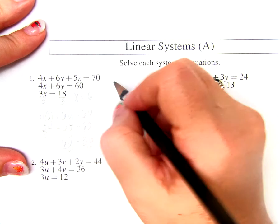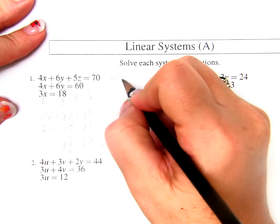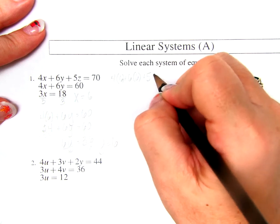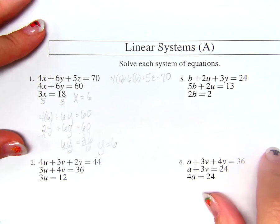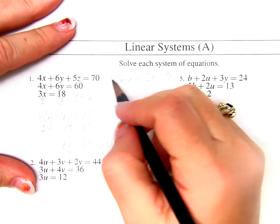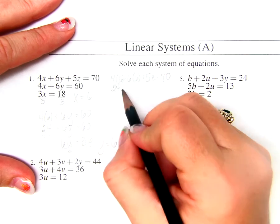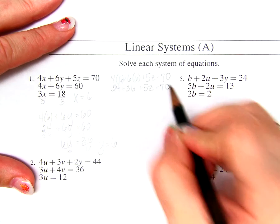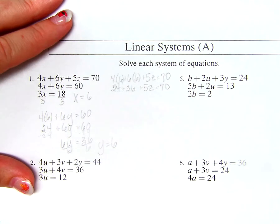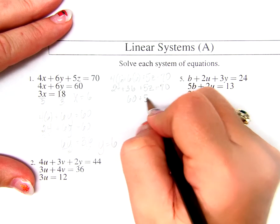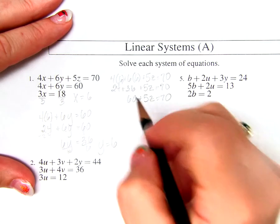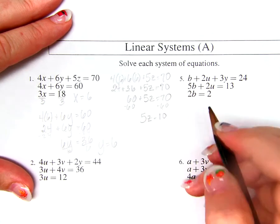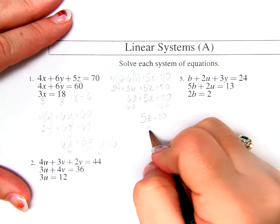Now plugging into the first equation: 4 times 6 plus 6 times 6 plus 5Z equals 70. So 4 times 6 is 24, and 6 times 6 is 36, so 24 plus 36 is 60. 60 plus 5Z equals 70. 5Z equals 10. Z equals 2.